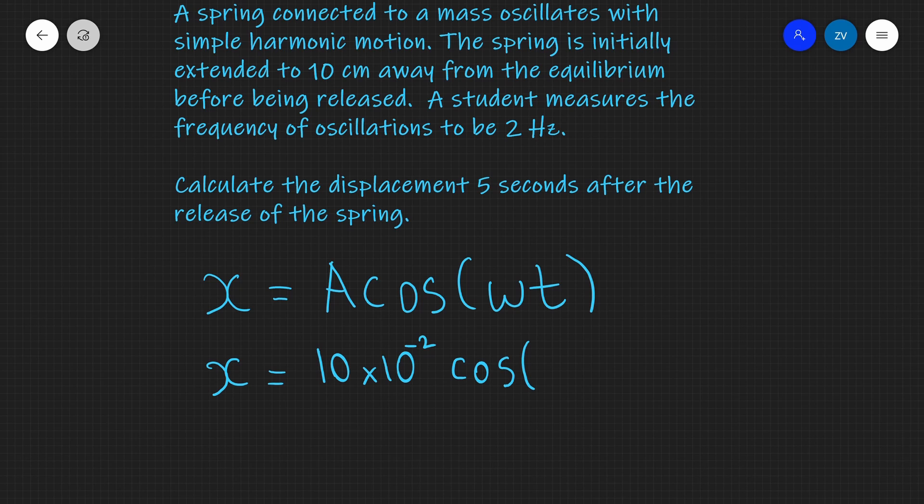Now omega is actually equal to 2 pi f. I'm not given the angular frequency, I'm given the normal standard frequency in hertz. So I'm going to substitute that in: 2 pi times the frequency which is 2 hertz, and the whole thing I'm going to multiply by 5.